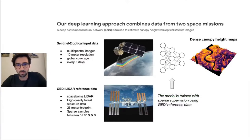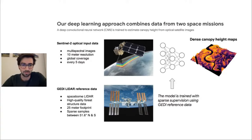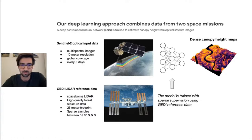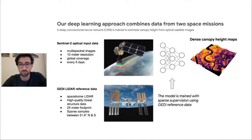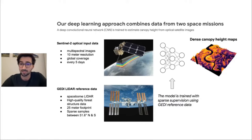We propose a two-step procedure. In the first step, we developed a deep learning approach combining remote sensing data from two ongoing space missions — Sentinel-2 optical images and the GEDI LiDAR. We train a deep convolutional neural network, CNN, to estimate dense canopy height maps from the optical images. The sparse but high-quality forest structure data from the GEDI mission is used as a sparse supervision signal to train these models. We train the model on data from Southeast Asia, and once trained it only relies on the optical images to make predictions and create dense canopy height maps.